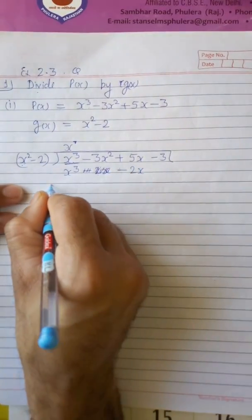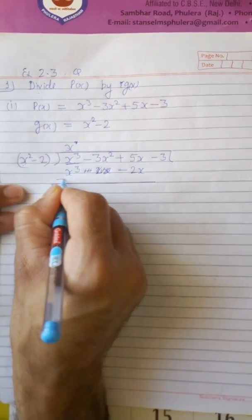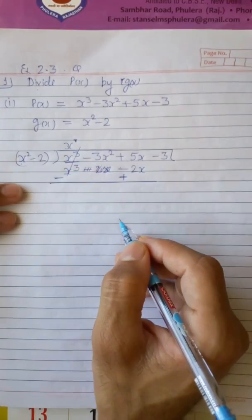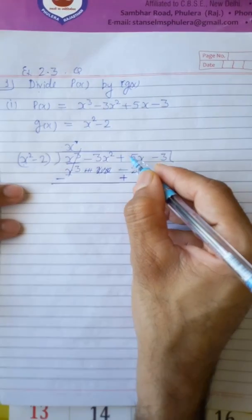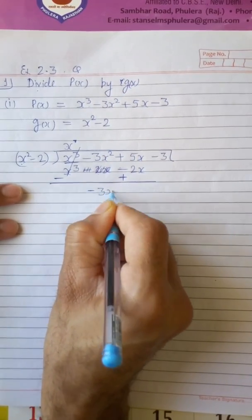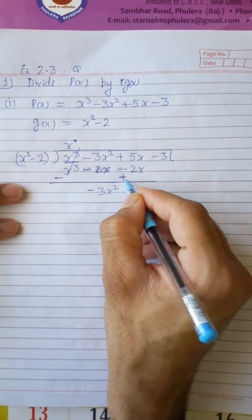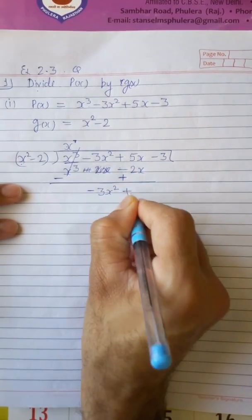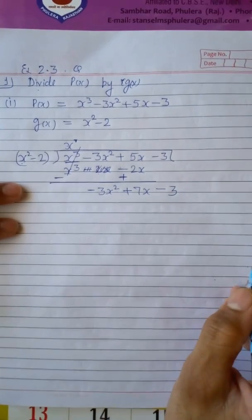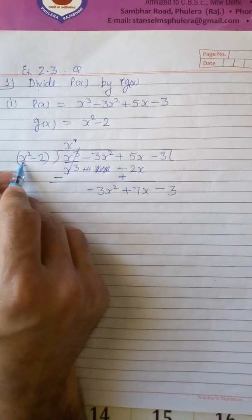Draw a line and change the sign: negative becomes positive. The x cubed terms cancel. Bring down negative 3x squared as it is. Then 5x plus 2x equals 7x. Bring down the next term, minus 3. Now we have the new dividend: negative 3x squared plus 7x minus 3.